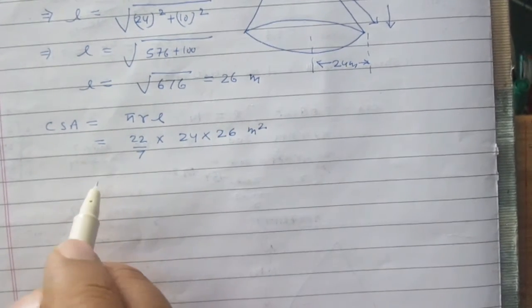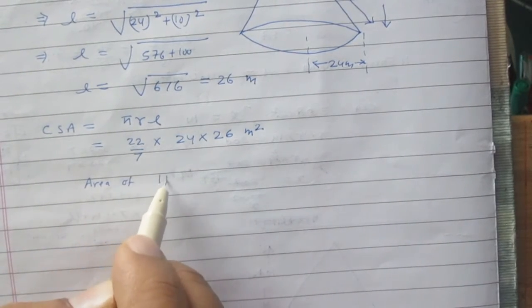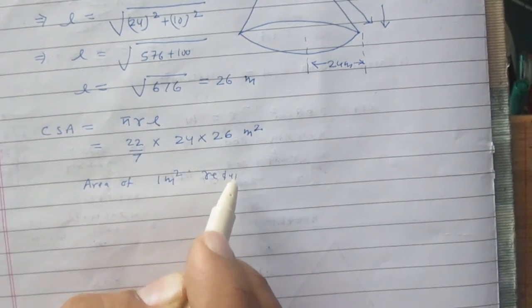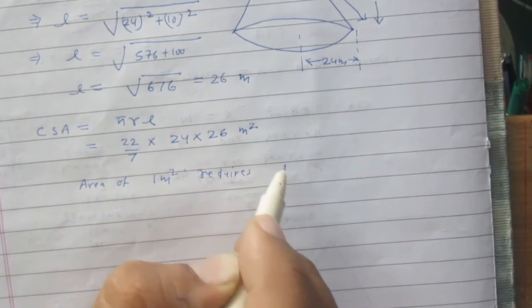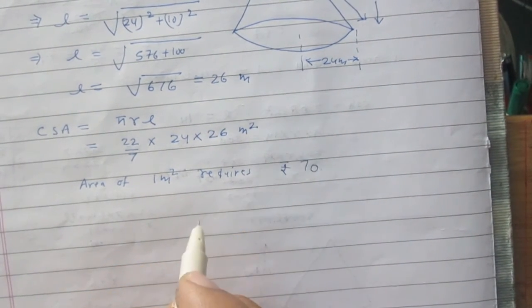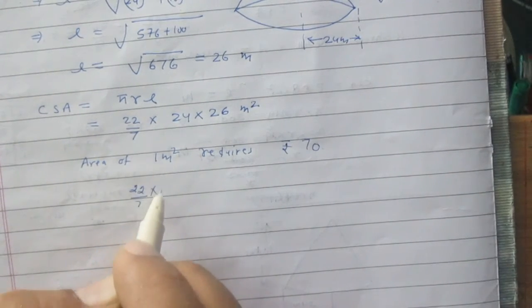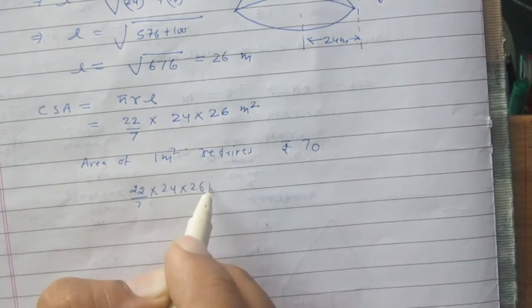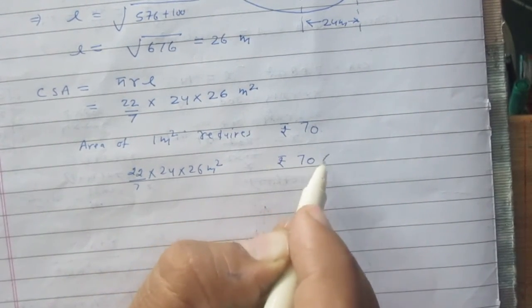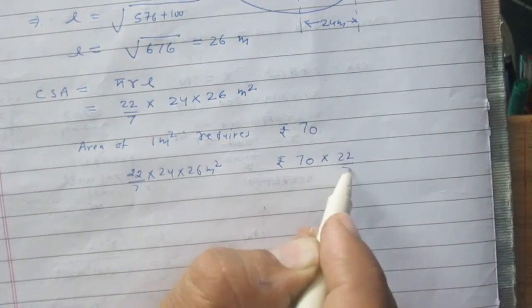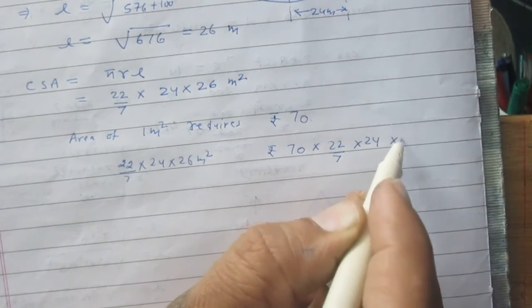Now, we are given in this question that area of 1 meter square requires rupees 70. So area of 22 by 7 into 24 into 26 meter square will require rupees 70 into 22 by 7, then 24 and then 26.